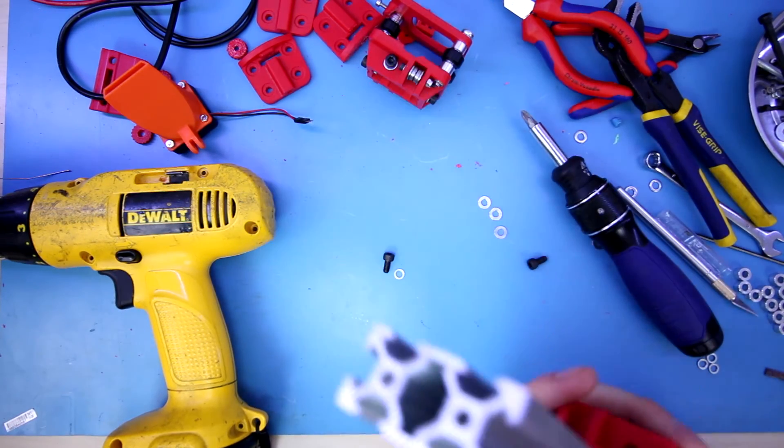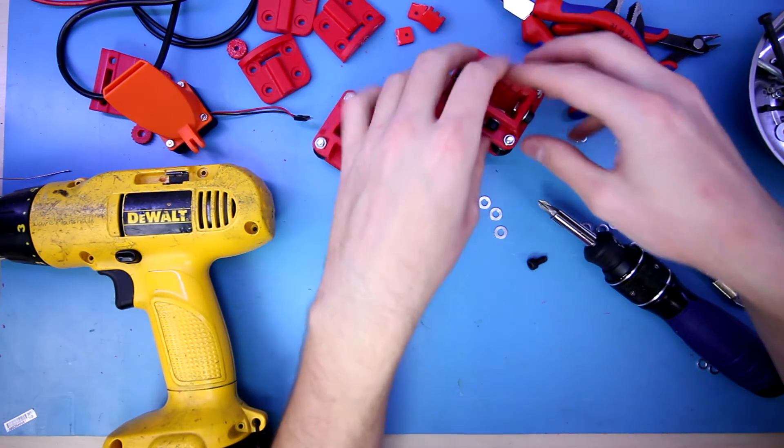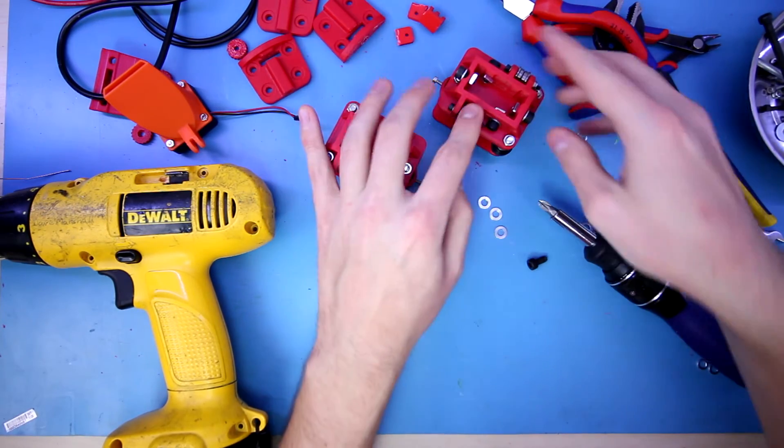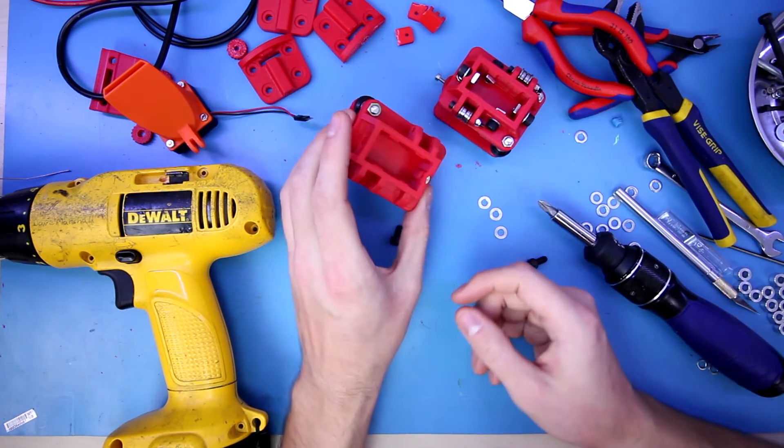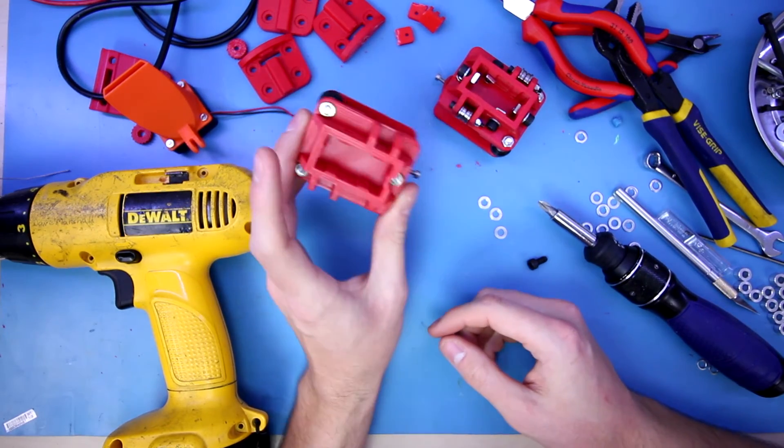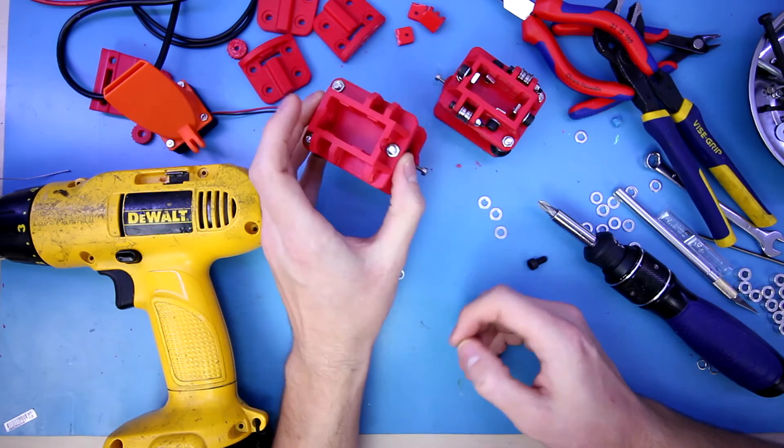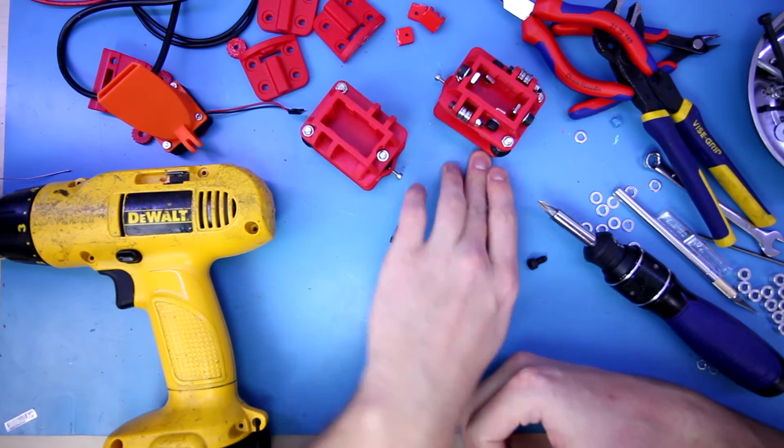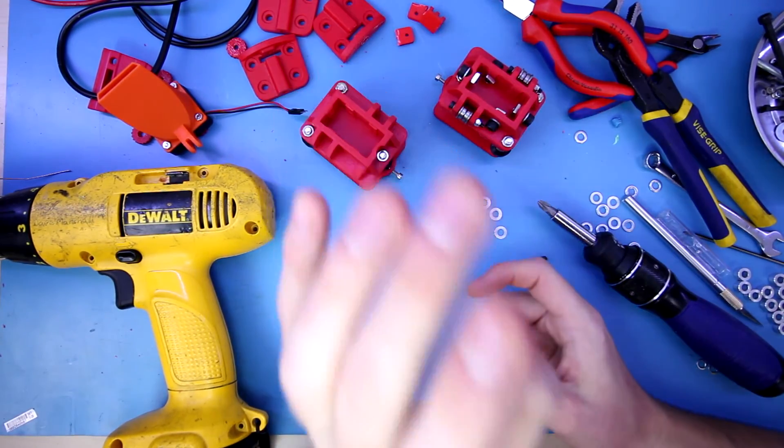So now I just have to finish all of this assembly here, the little nuts and whatnot and the bearings for the belts. Once I get that done I can go ahead and install this onto the printer. However, I'm not going to be able to do that tonight, just running out of time, so I'm going to go ahead and save that for the next episode.